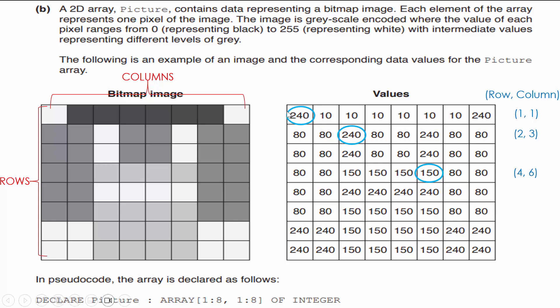To confirm the position of 150: counting the rows — 1, 2, 3, 4 — it's in row 4. Counting the columns — 1, 2, 3, 4, 5, 6 — it's in column 6. So picture[4][6] = 150. A final example: another instance of 240 is on row 8, column 8. The first number in picture[i][j] always corresponds to the row; the second number corresponds to the column.